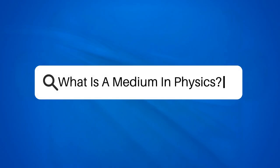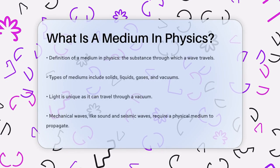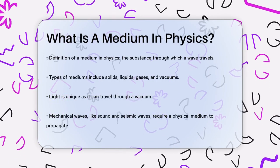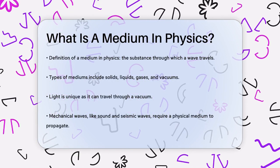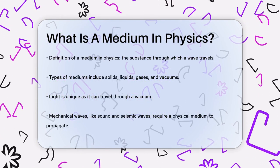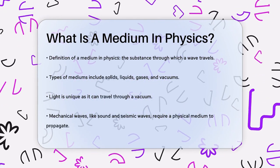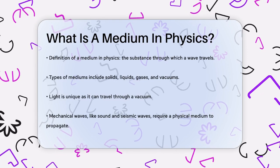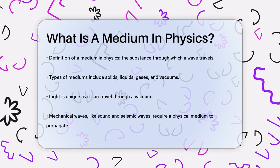What is a medium in physics? Have you ever wondered how sound waves from your favorite song reach your ears, or how light from the sun travels through space? It all happens through something called a medium. A medium in physics is essentially the substance or material through which a wave can travel.